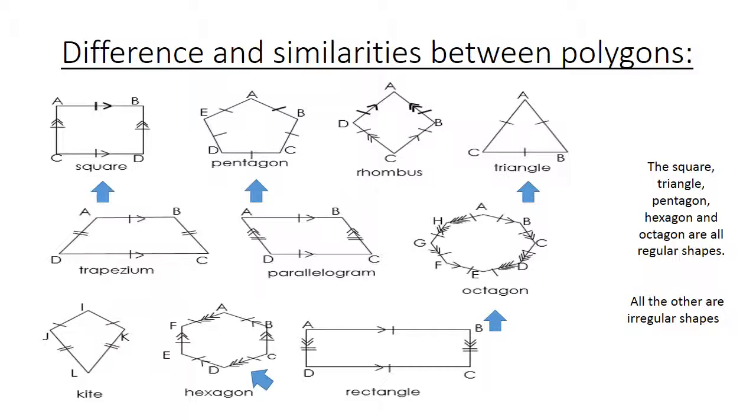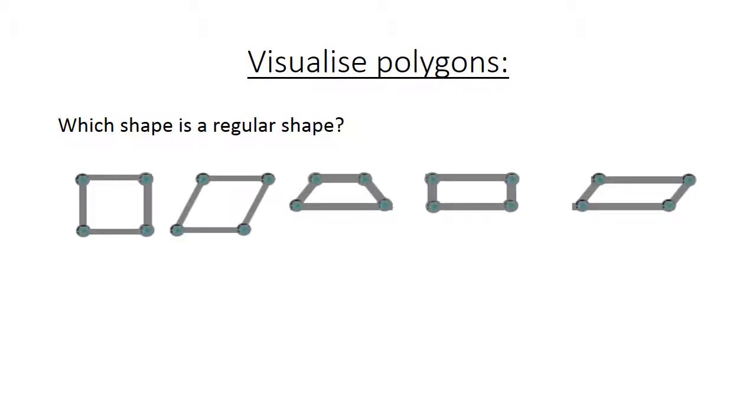Shapes. The square, equilateral triangle, regular pentagon, regular hexagon, and regular octagon are all regular shapes. All the others are irregular shapes. Now visualize polygons. Which shape is a regular shape? The first one, because all sides must be equal.